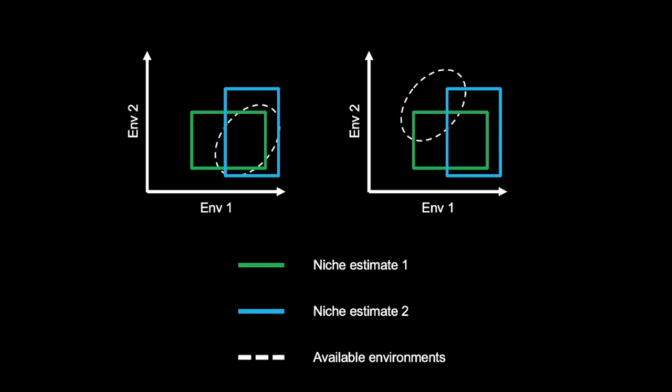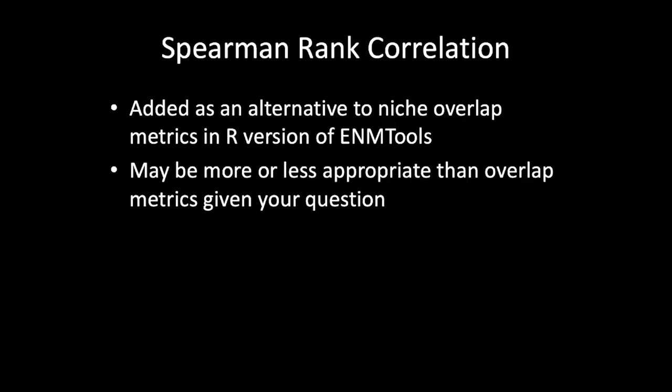I want to address an alternative to these niche overlap metrics that we've put into E&M tools — though you can also easily do this yourself in R — which is Spearman rank correlation. I prefer Spearman because it doesn't necessarily require things to be linear. Spearman rank correlation is a good old-fashioned non-parametric measure of correlation between two things, and in some cases I think it's more appropriate than the ecological overlap metrics, given our questions and data.